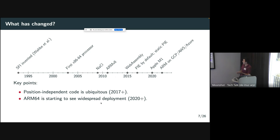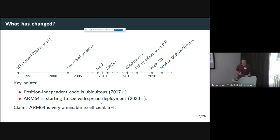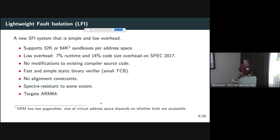Looking at a timeline of software sandboxing, the key recent changes are: position-independent code is now much more common with better compiler support, and the ARM architecture is seeing broader adoption — Apple has moved all products to ARM, and ARM is becoming more widespread in cloud providers. This is important because ARM is especially amenable to efficient SFI. LFI is an SFI system supporting tens of thousands of sandboxes per address space with very low overhead and simple implementation — no compiler modifications required — but it only targets ARM64, so it is not a portable approach.